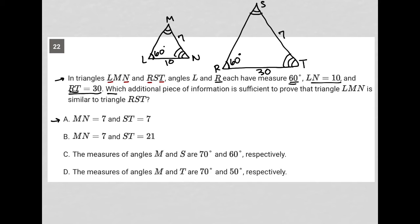And we already have established that this is 10 and this is 30. So I'd expect this to be 21, in fact, if these were similar triangles. So I'm going to erase the 7 and erase the 7 over here. And I'm going to cross out choice A. That doesn't work.